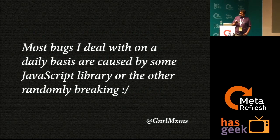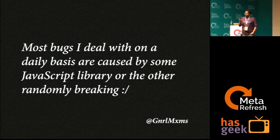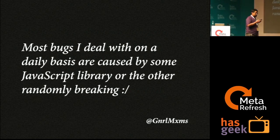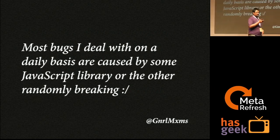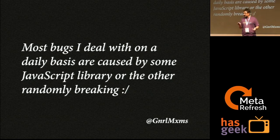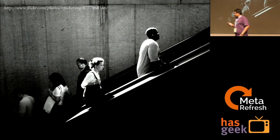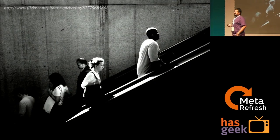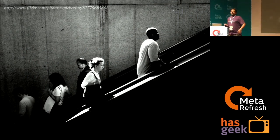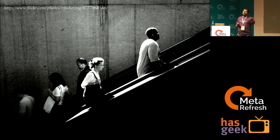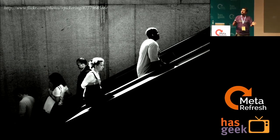Here's a local Bangalore boy who says most bugs he deals with on a daily basis are caused by some JavaScript library randomly breaking up. And this is a harsh reality. Christian Hellman also proposed a nice analogy: you have elevators and you have escalators. If an elevator breaks, you can't do anything about it. If an escalator breaks, you can still use it as a staircase. We want our software to become escalators and not elevators.